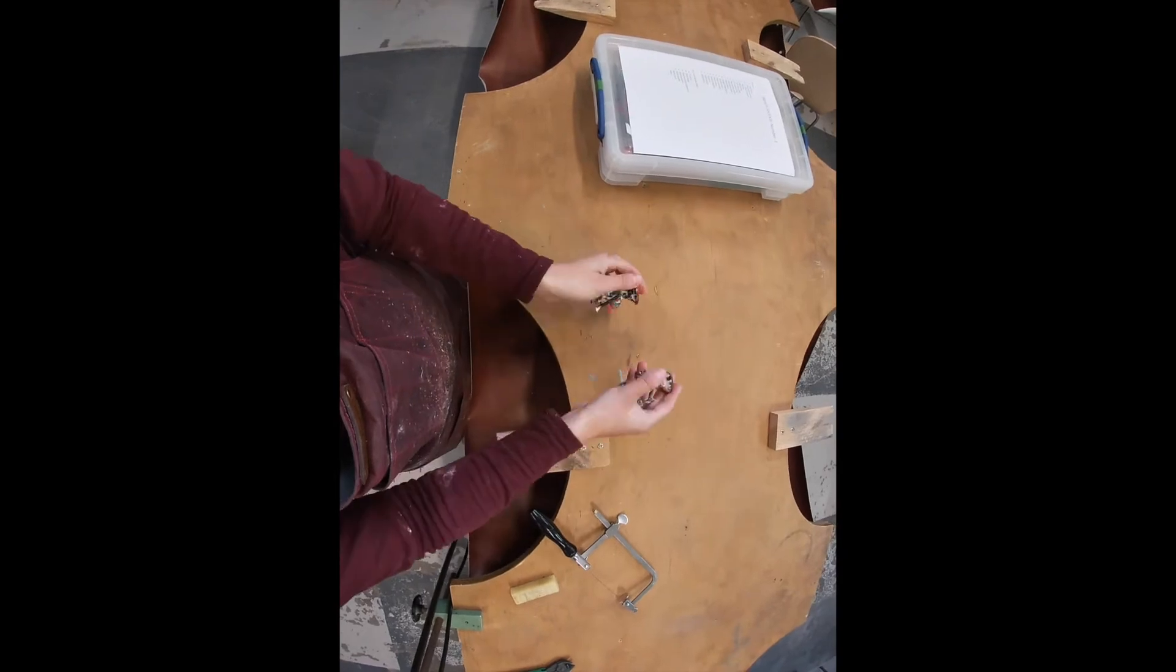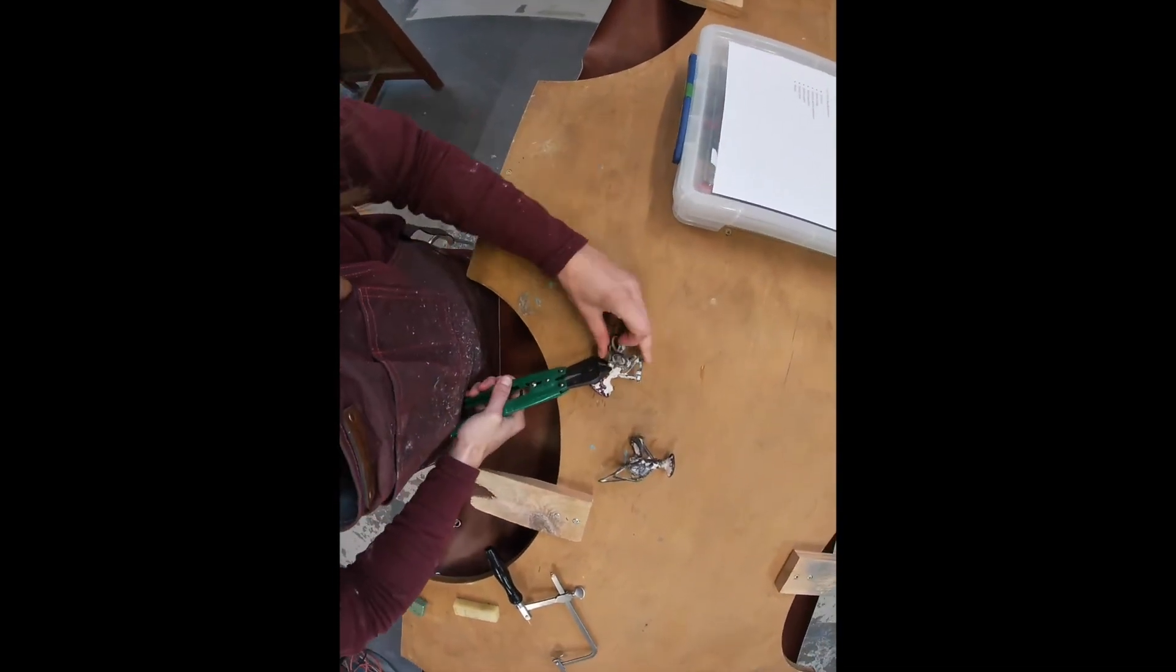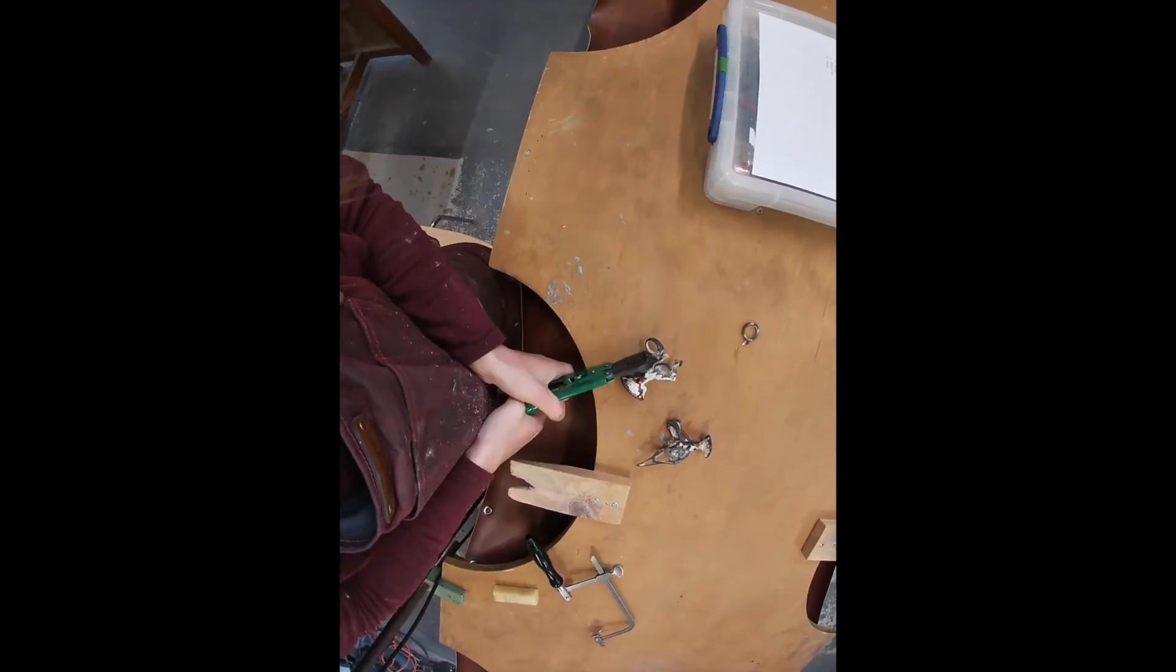Here are my metal tree castings. Now I can use sprue cutters or my piercing saw to take the models off the tree and get them ready for clean up.